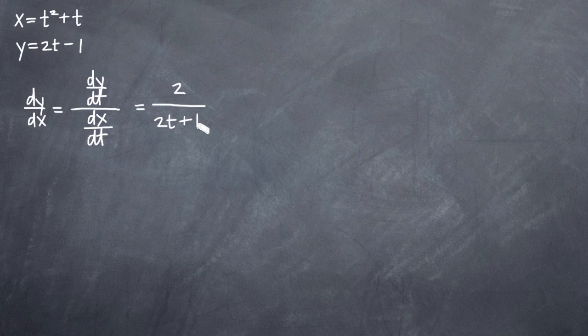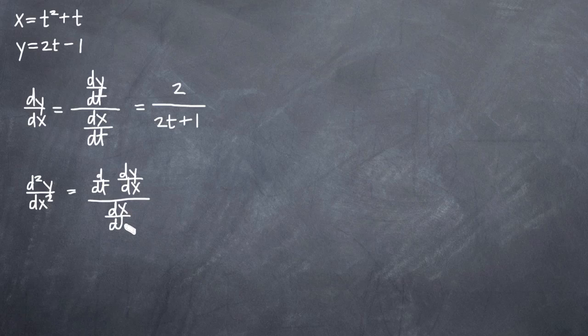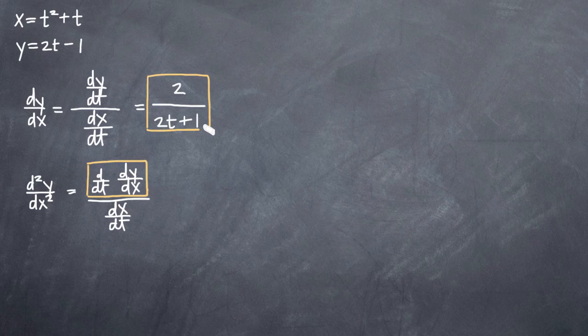Now that we've found the first derivative of this parametric equation, we can go ahead and find the second derivative of the parametric equation. We'll denote it with d squared y over dx squared and we'll say that that's equal to d/dt of dy/dx over dx/dt. All this formula tells us is that the numerator of our second derivative will be the derivative of our first derivative, and our denominator will just be dx/dt, which we've already calculated. We know that's equal to two t plus one.